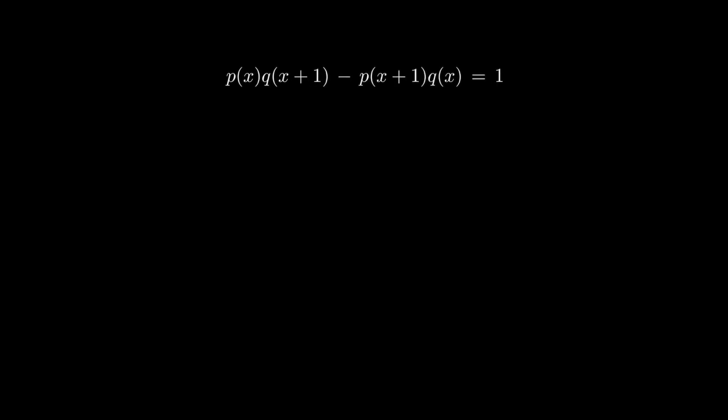So suppose we have polynomials p and q that satisfy the given equation. A very natural thing to do is to replace x by x minus 1. So p(x+1) becomes p(x), q(x+1) becomes q(x), and we have another combination of polynomials that contain p(x) and q(x), on the other side of the equation, still equal to 1.